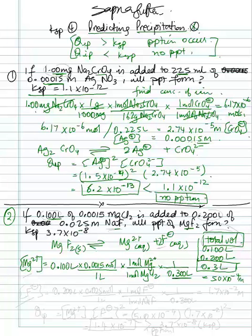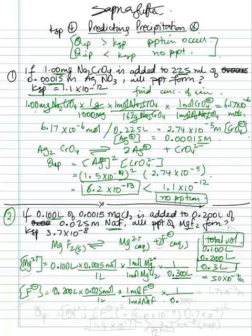Then the fluoride ion concentration: 0.200 liters × (0.025 moles/liter) × (1 mole F⁻ / 1 mole NaF), and divide by the total volume of 0.3 liters. This gives us 1.7 times 10 to the negative 2 molar.